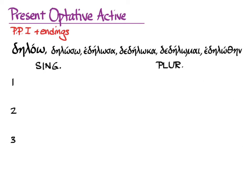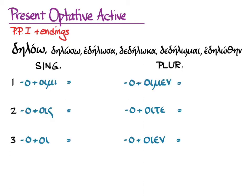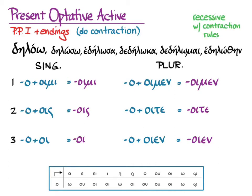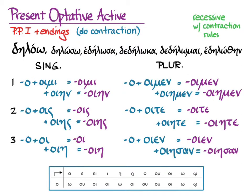Now it is time for the optative. First principal part and endings. We contract the omicrons with the optative active endings we already know, and we get: oimi, ois, oi, oimen, oite, oien. The optative active in contract verbs also has alternate endings, so we get — with recessive accent and contraction rules — the alternate forms: oiēn, oiēs, oiē, oiēmen, oiēte, oiēsan. Omicron plus oiē becomes oiē, so those are the contracted alternate forms.